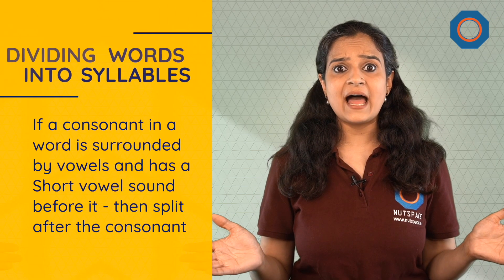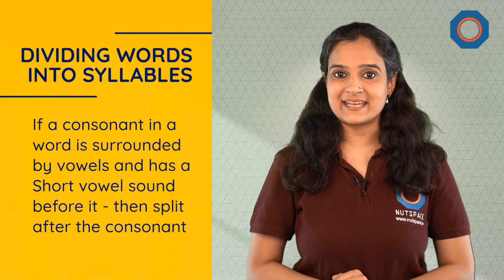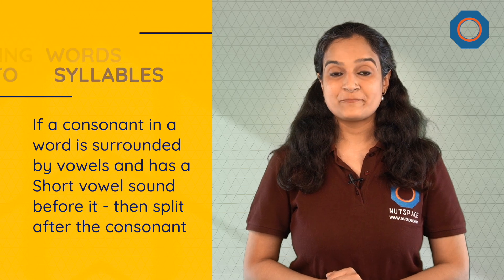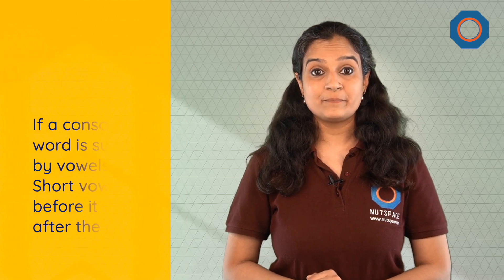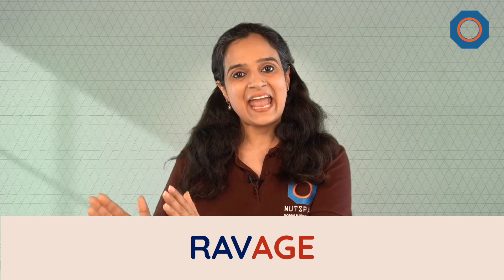Does the vowel have a short sound? Then in that case, divide after the consonant. Examples: metal (met-al), river (riv-er), model (mod-el), value (val-ue), ravage (rav-age).